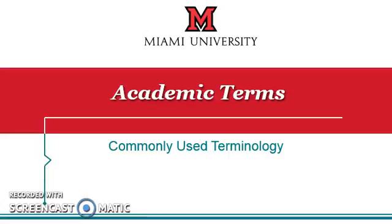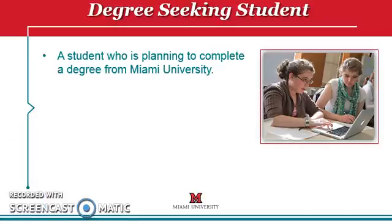This screencast will review commonly used academic terms at Miami University. A degree-seeking student is a student who is planning to complete a degree from Miami University, while an exchange student plans to attend Miami University for only one semester and then graduate from another institution.